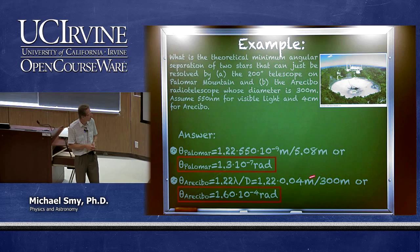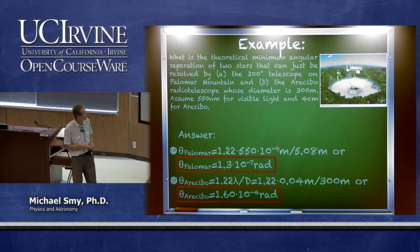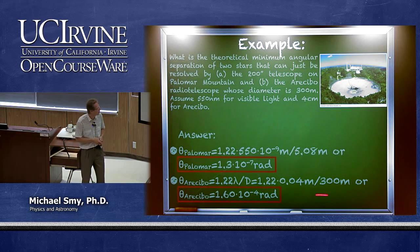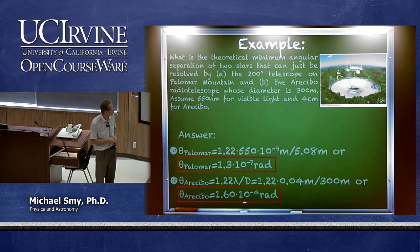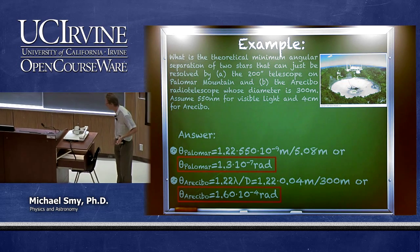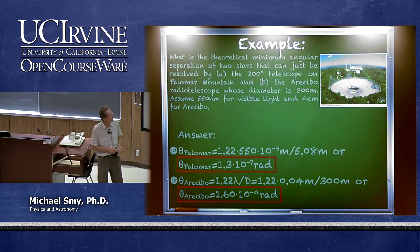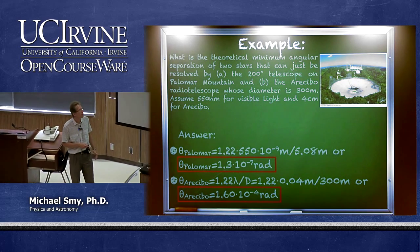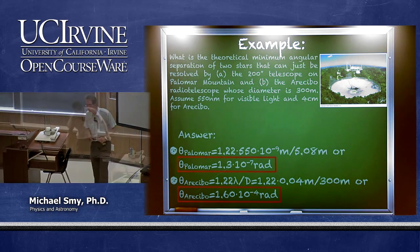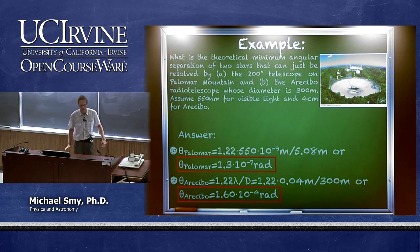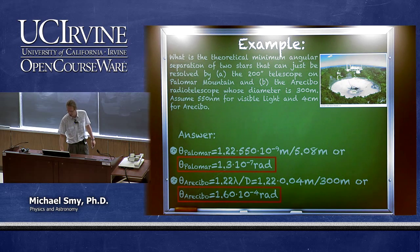The larger diameter of Arecibo allows detection of much fainter objects, but resolution is harder to achieve in radio astronomy. In general, one combines multiple radio telescopes to get a larger effective diameter.